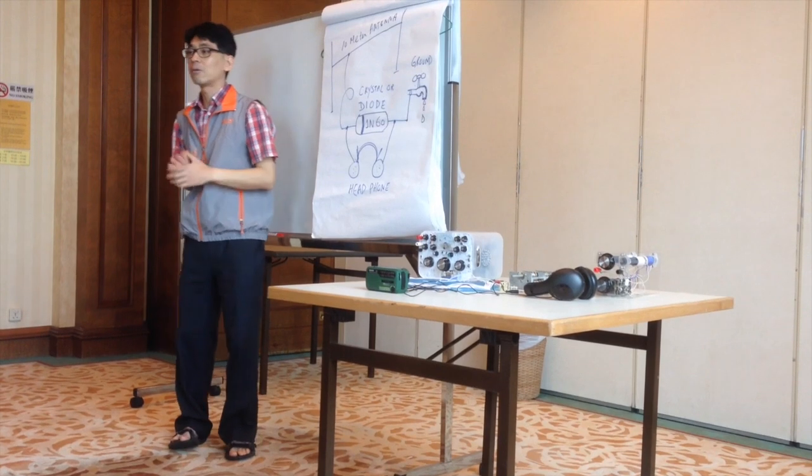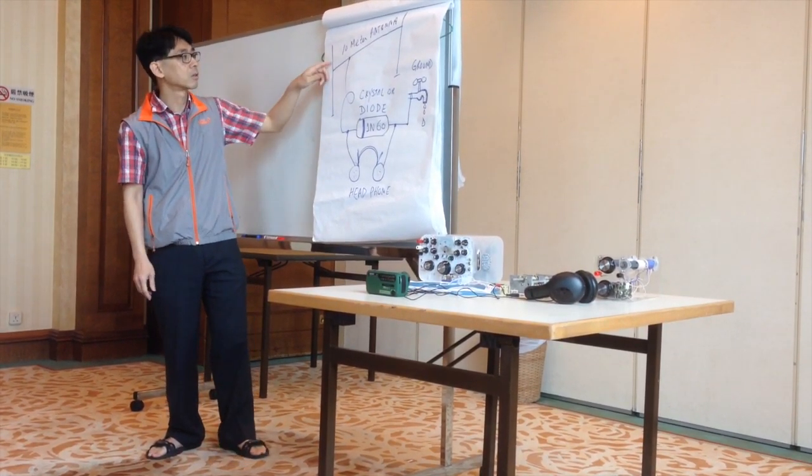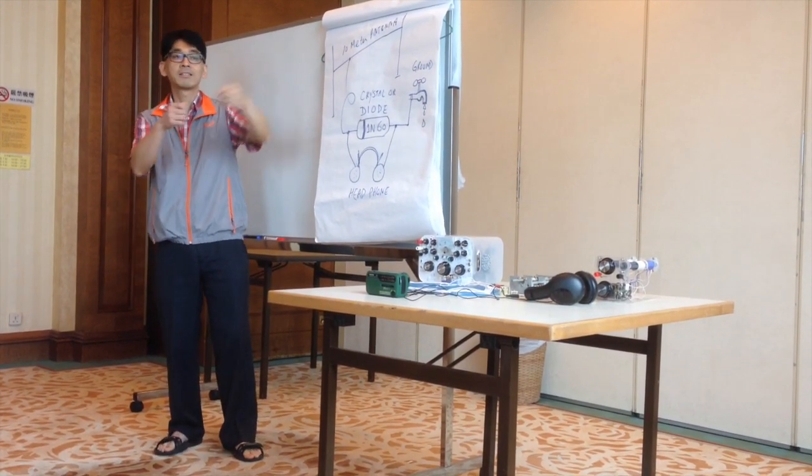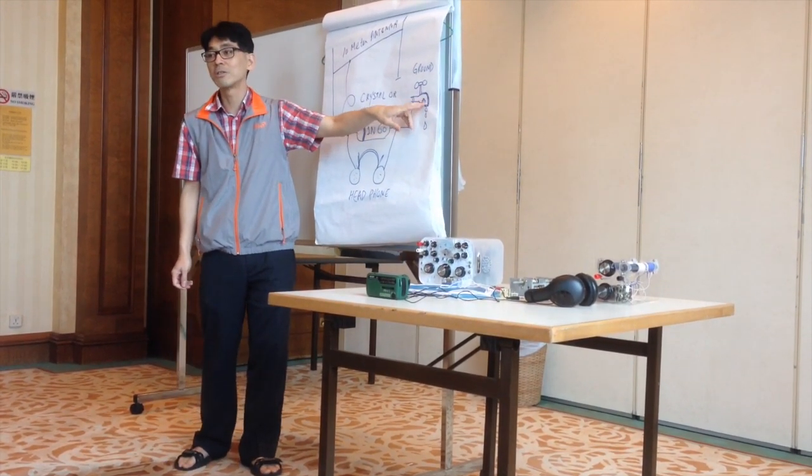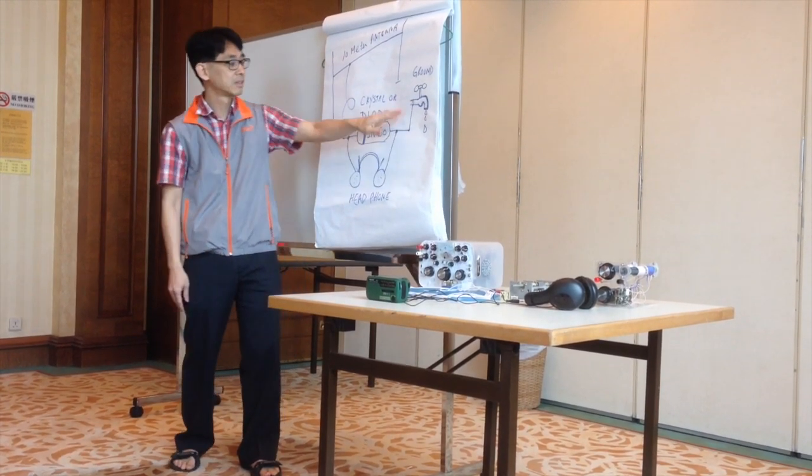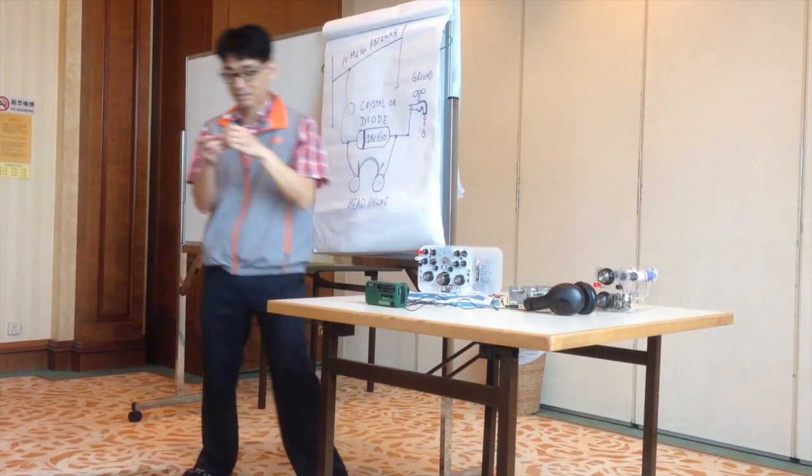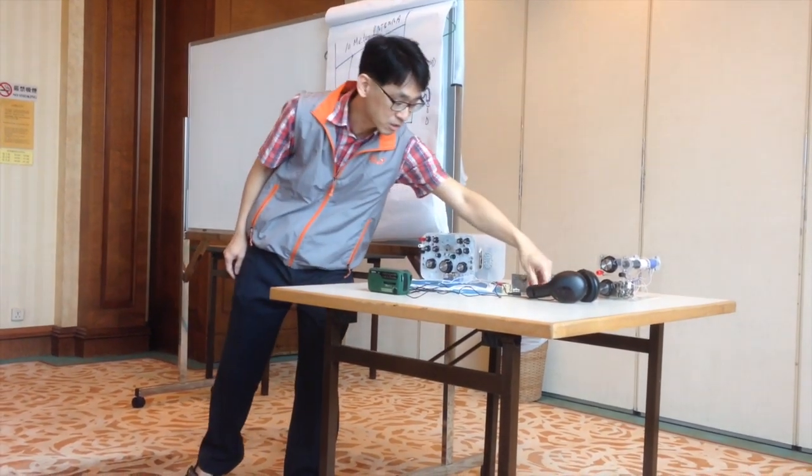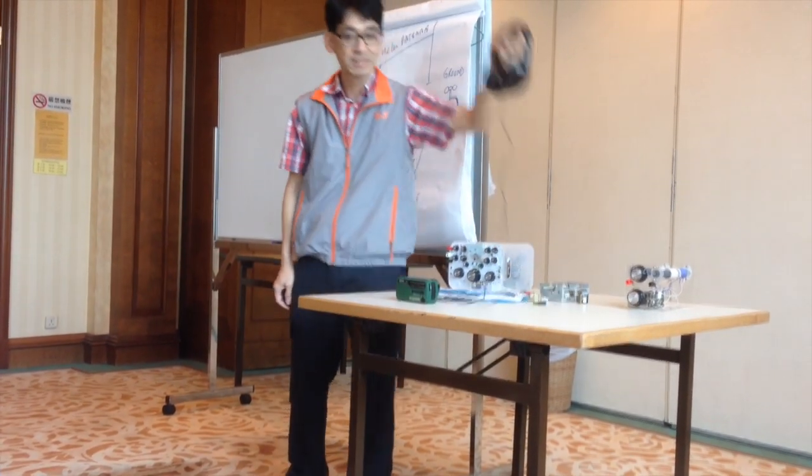You may wonder how a crystal radio is made. It's made up of four things. You have an antenna, which is pretty long, like more than 10 meters, that you can hang from tree to tree. Then you have a ground connection, usually connected to your water pipe because it goes into the earth. Then you have this thing called a diode. I've got a small piece here. And then you have a headphone like this one.